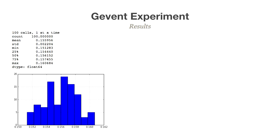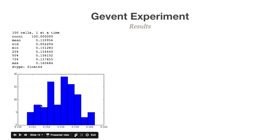If you do 100 requests one at a time, everything works as expected. We see 150 millisecond latency in the mean, and the max latency is about 160 milliseconds. The distribution is nice and uniform — exactly what you'd expect.